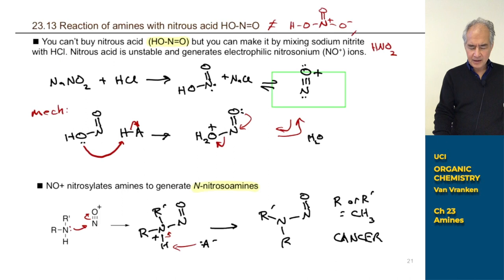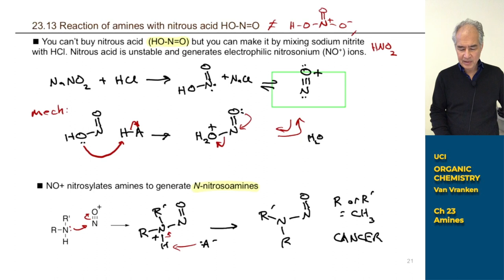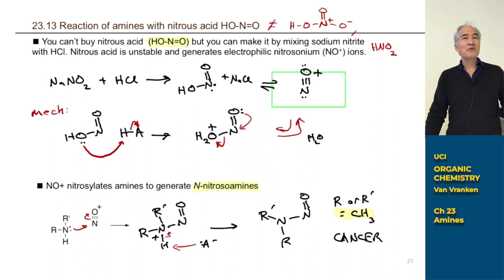On Wednesday before we left, I talked about the reaction of secondary amines with nitrous acid. When you react secondary amines with nitrous acid, you get these N-nitroso compounds. And I told you that if one of these R-groups is a methyl group, or both of them, that's gonna cause cancer. There's not that many molecules that scare me, but N-methyl nitroso amines scare the living daylights out of me. I would never want to expose myself to that.